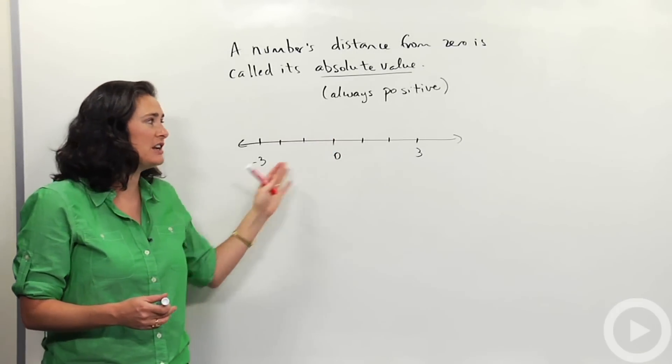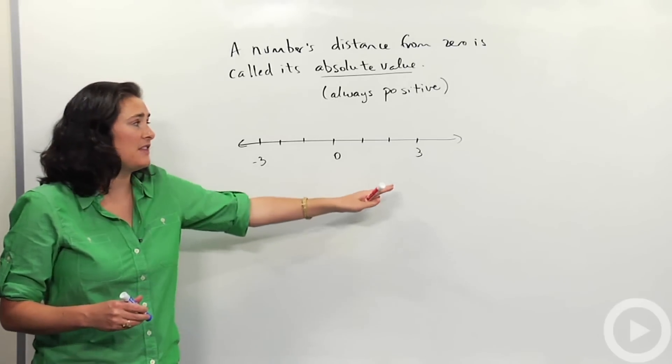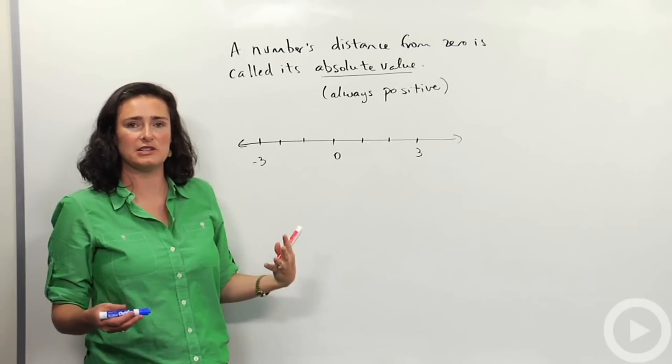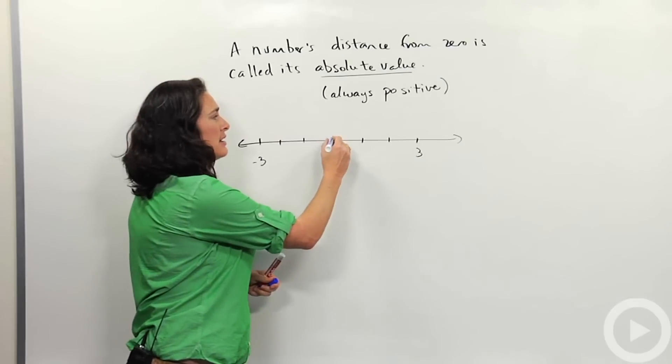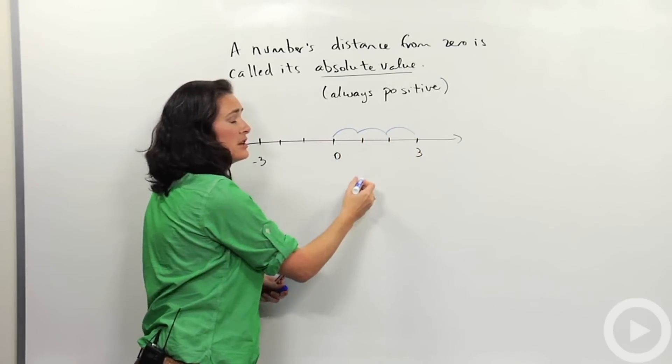For example, I've drawn here a number line. And if we want to look at the number three and we're saying how far away from zero is three, I would say, well, one, two, three units.